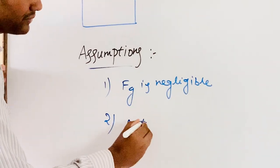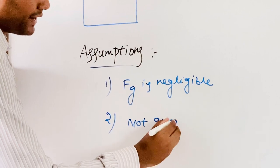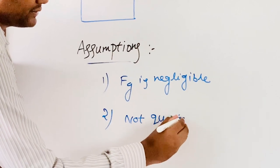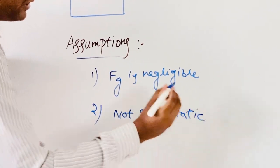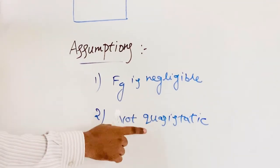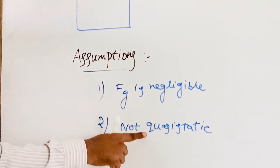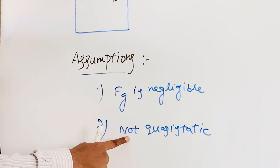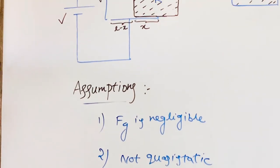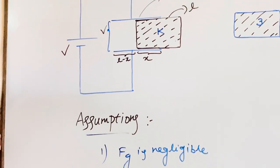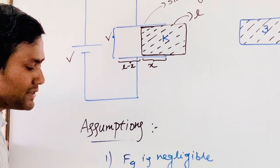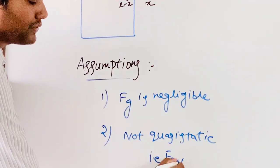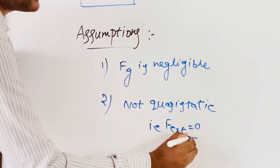The second assumption is: not quasi-static. Quasi-static means a slow process. Not quasi-static means this process is not a slow process — in other words, in this process there is no external force applied.